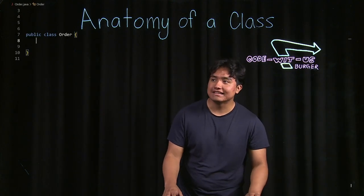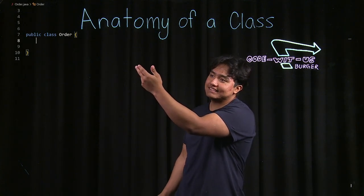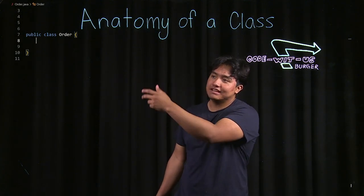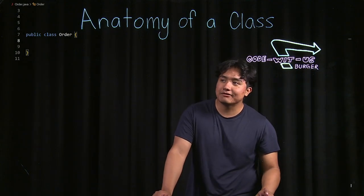So let's create our order class. What you do to create a class is you use the public class keyword and then your class name and use the curly braces, and then inside is where we're going to have all the instructions. So let's add that right now.